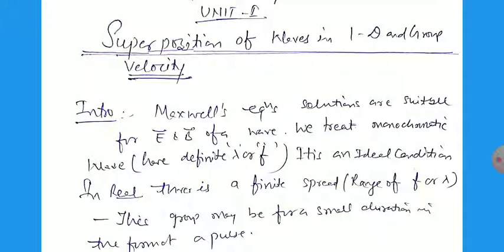We know very well that the Maxwell equations are very suitable for the electric field as well as the magnetic field for a wave; we can obtain electric field and magnetic field. We treat the monochromatic wave that has a single value — that is lambda, or the frequency, or the wavelength. It is an ideal condition, ideal situation, but in real life this is impossible because there are many many waves. In optics we have found that it is very difficult to obtain monochromatic light. Even laser light is called monochromatic, but we also use sodium as monochromatic light, which has two wavelengths. Similarly, other sources have different types of wavelength.